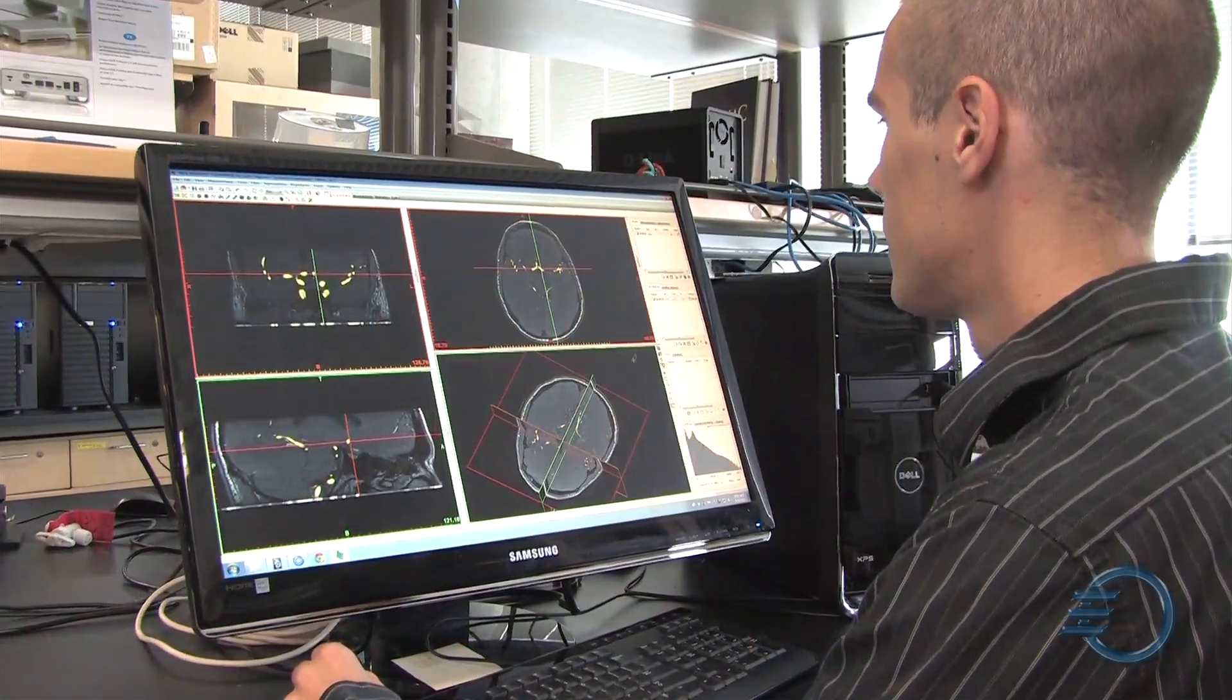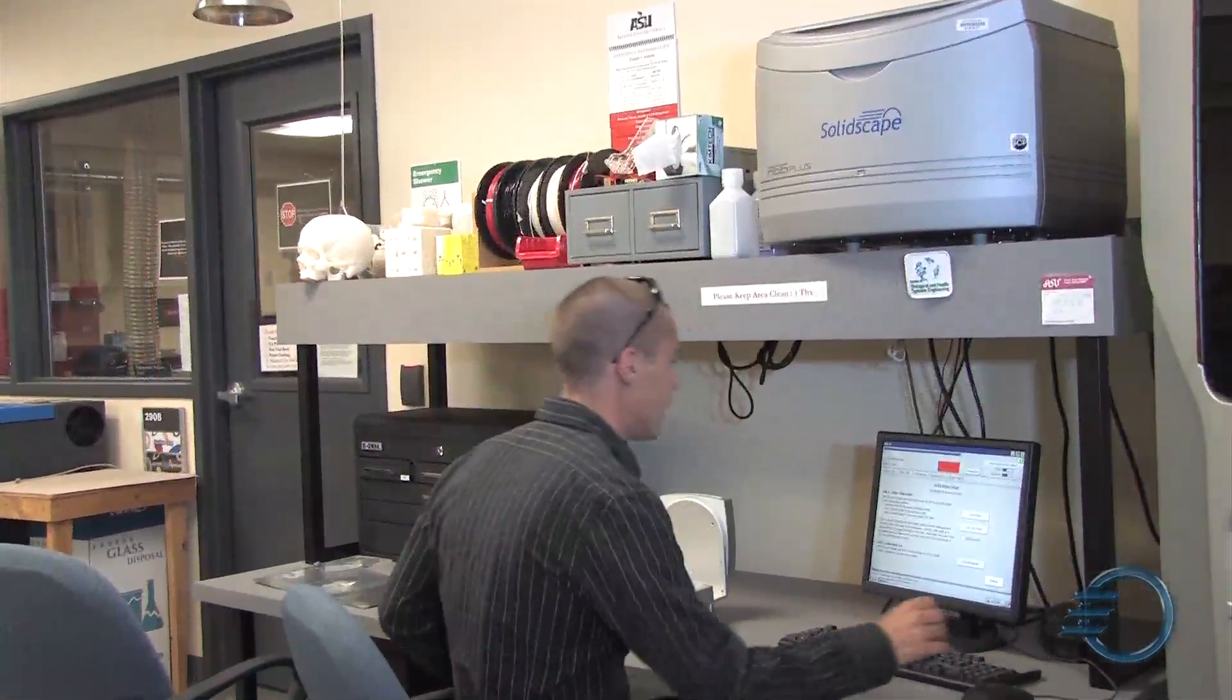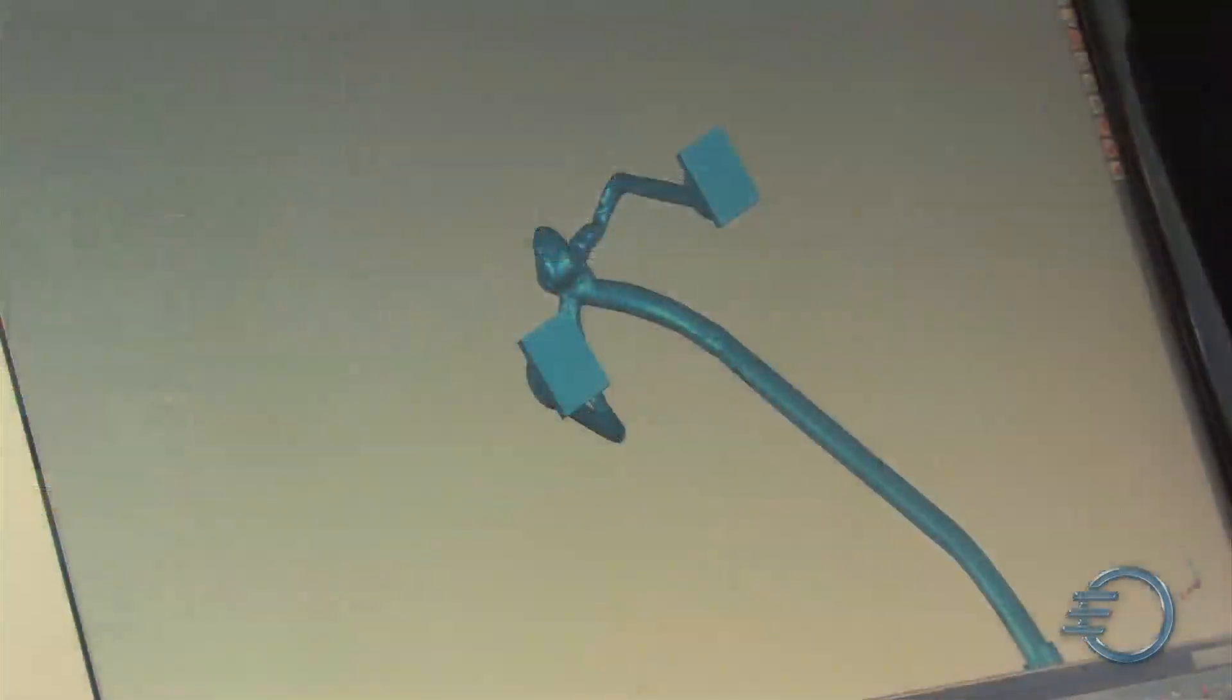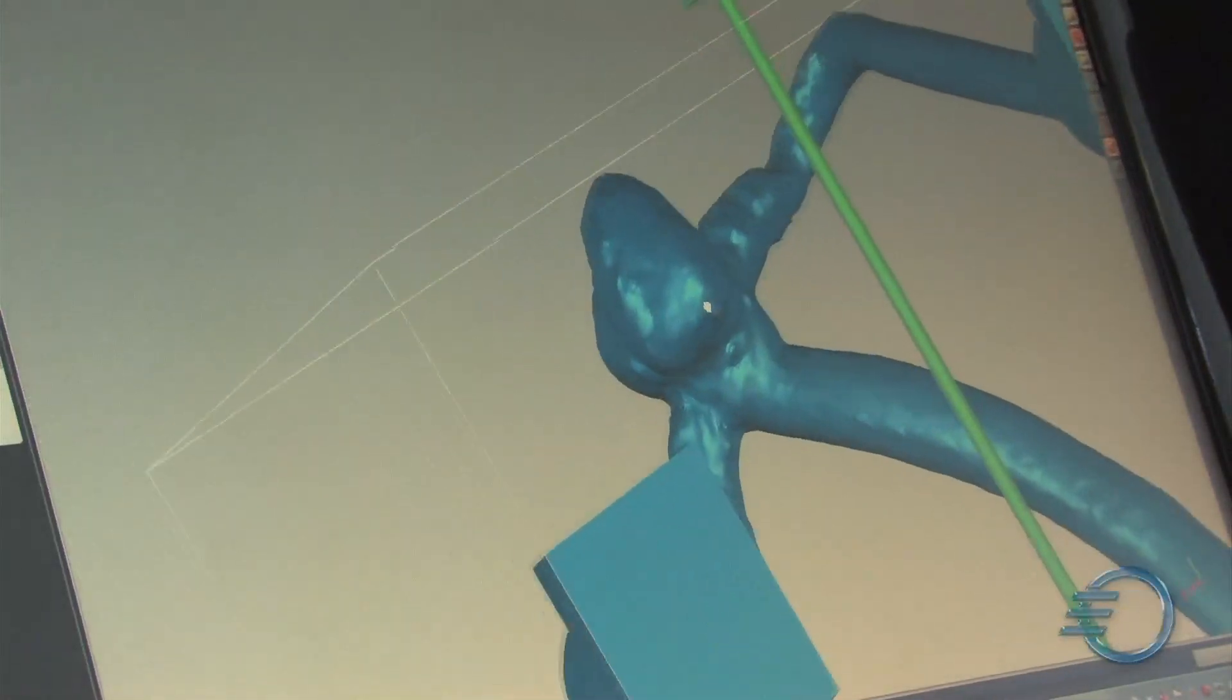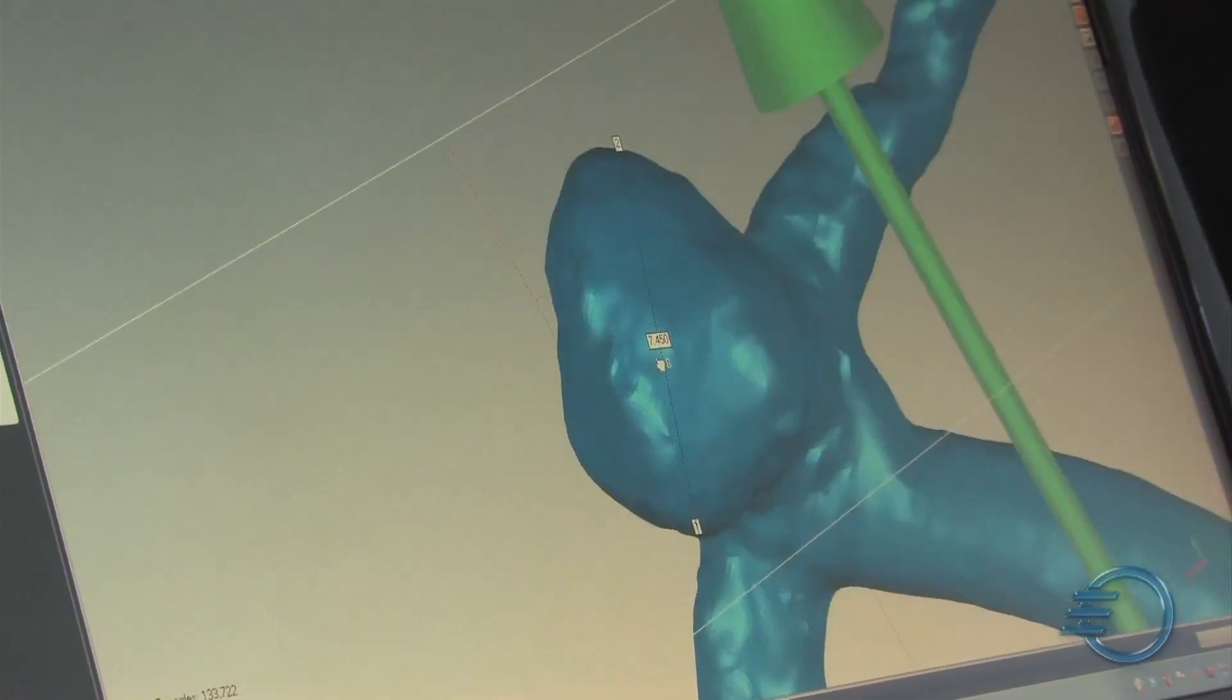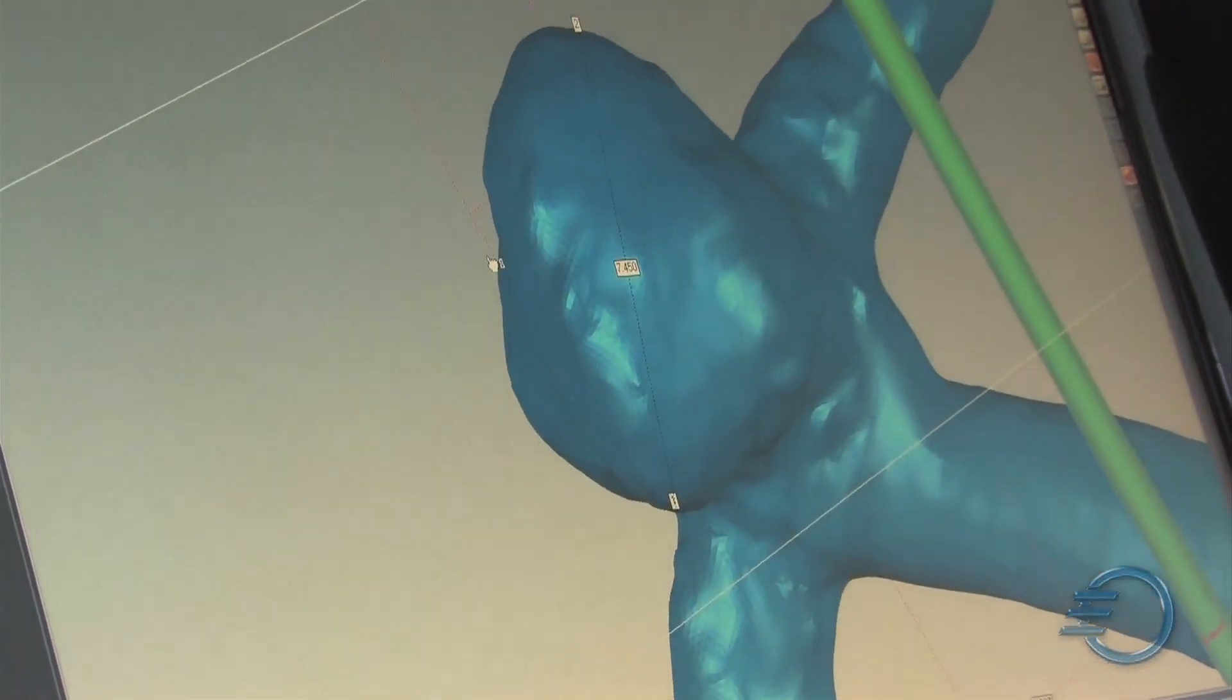My name is Justin Ryan. I'm a graduate research associate here at Arizona State University in the image processing applications laboratory. On a daily basis, I run both computer and physical modeling aspects of the lab. And that entails the creation of either blood vessels or even cardiac structures in a computer form as well as a physical form.